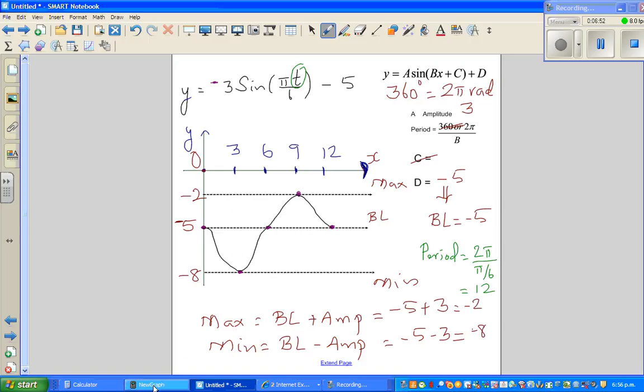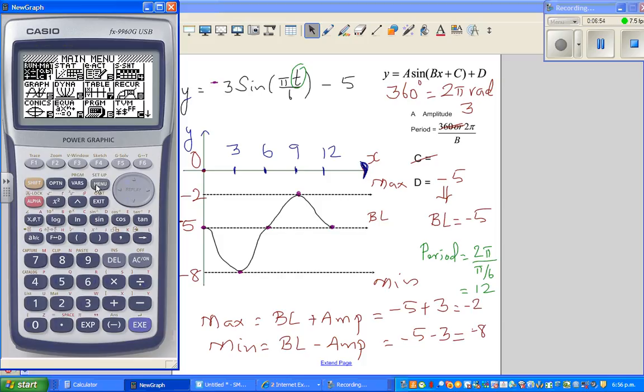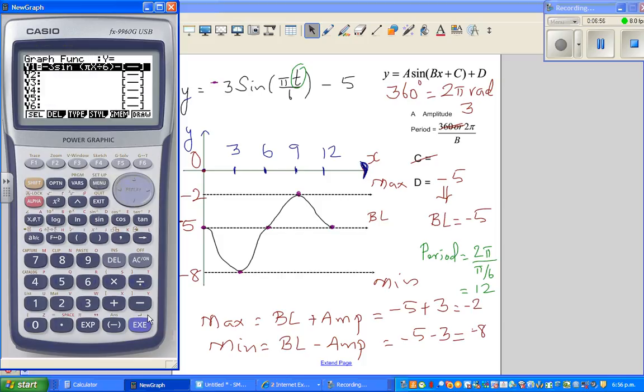We need to check this on a calculator. I'll go to graph and type in the equation. Minus 3, sine, bracket, shift pi, x. T is same as x, the variable is t there. Divide by 6, minus 5.